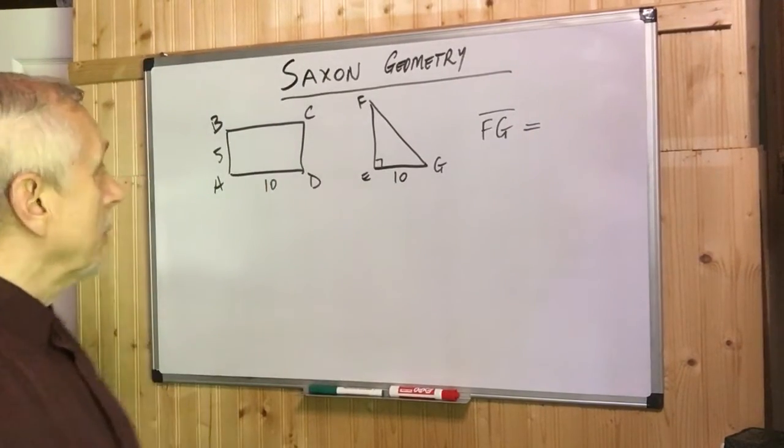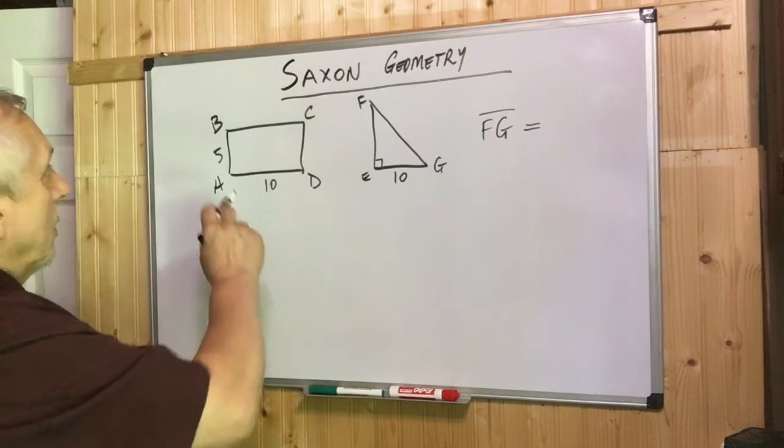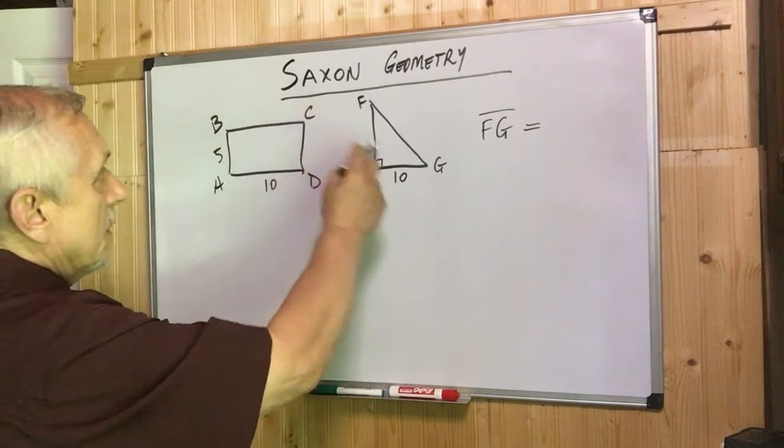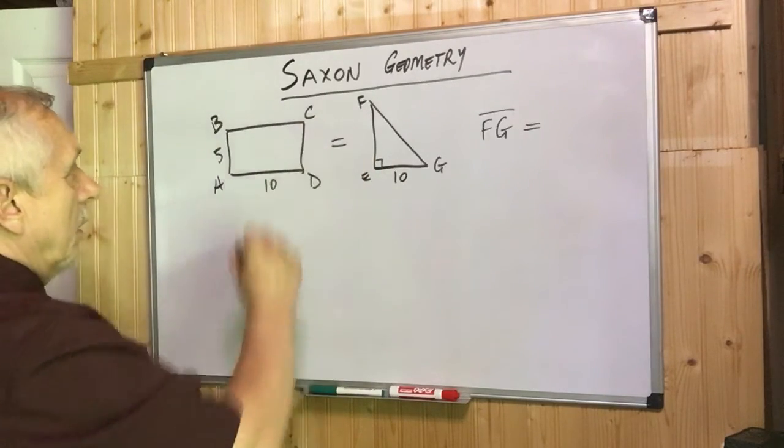Let's solve this Saxon geometry problem. We have a rectangle and the area of the rectangle and this right angle triangle, the areas are equal.